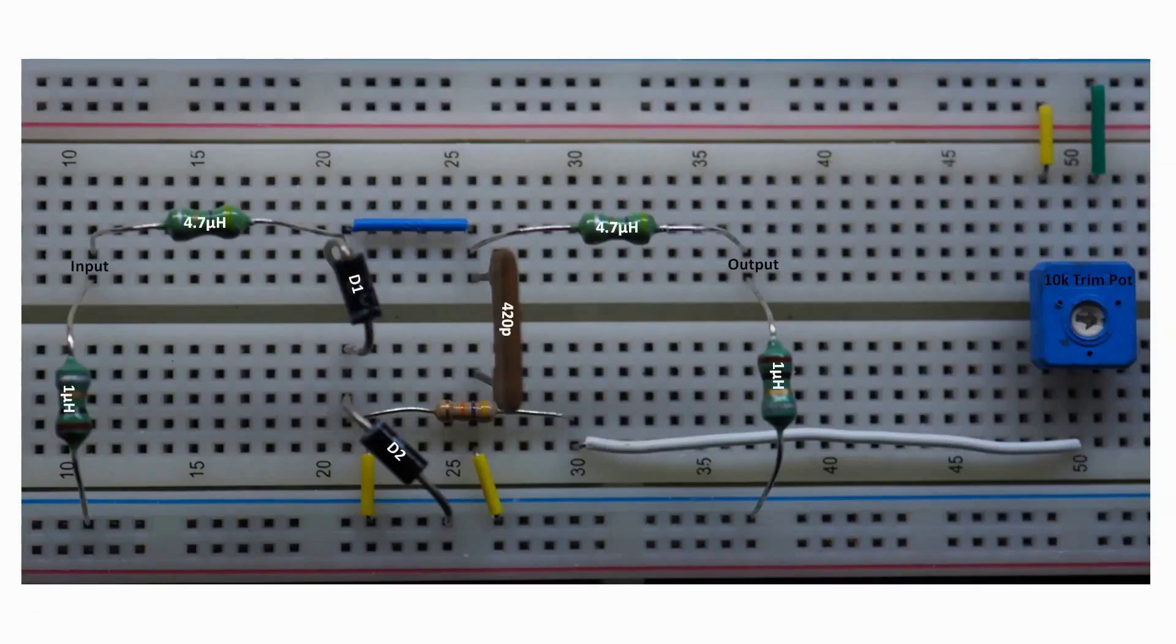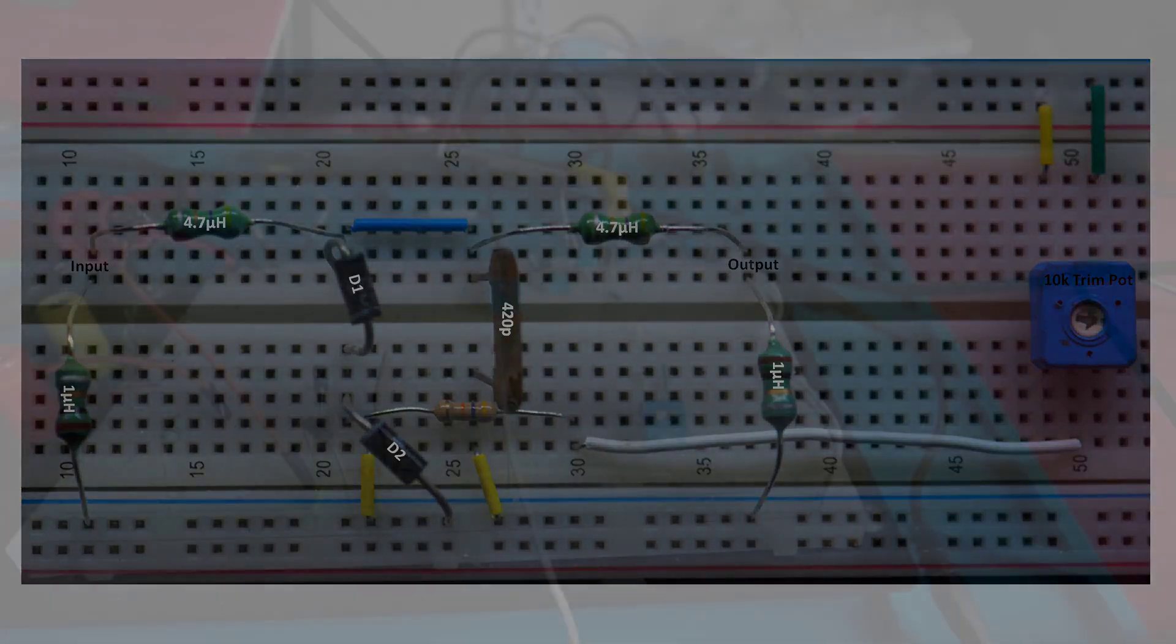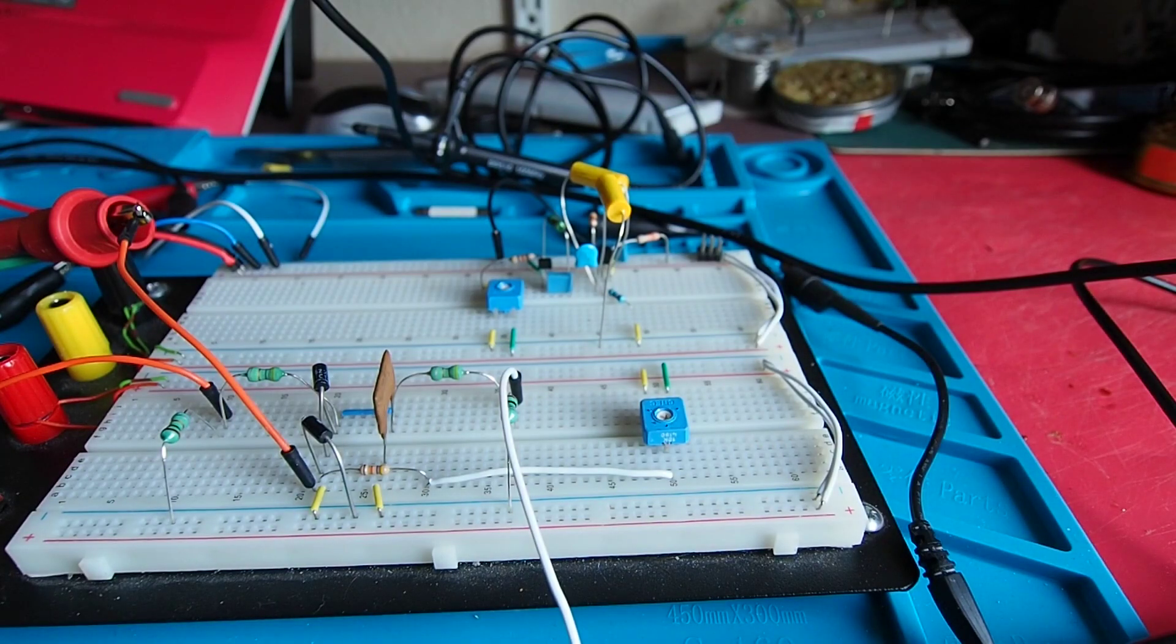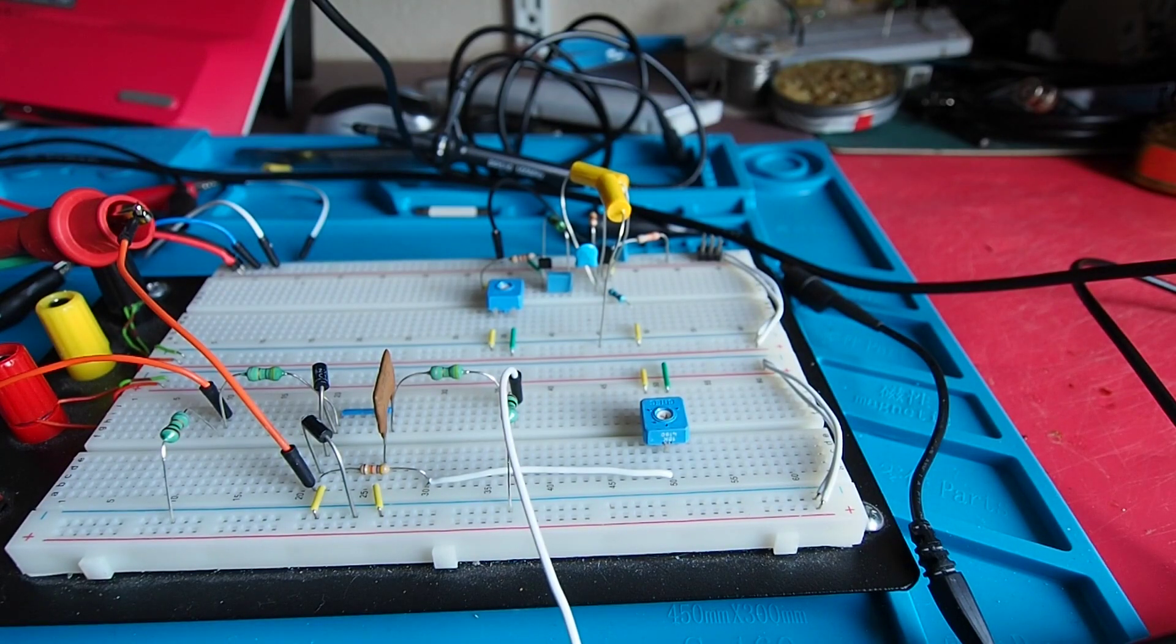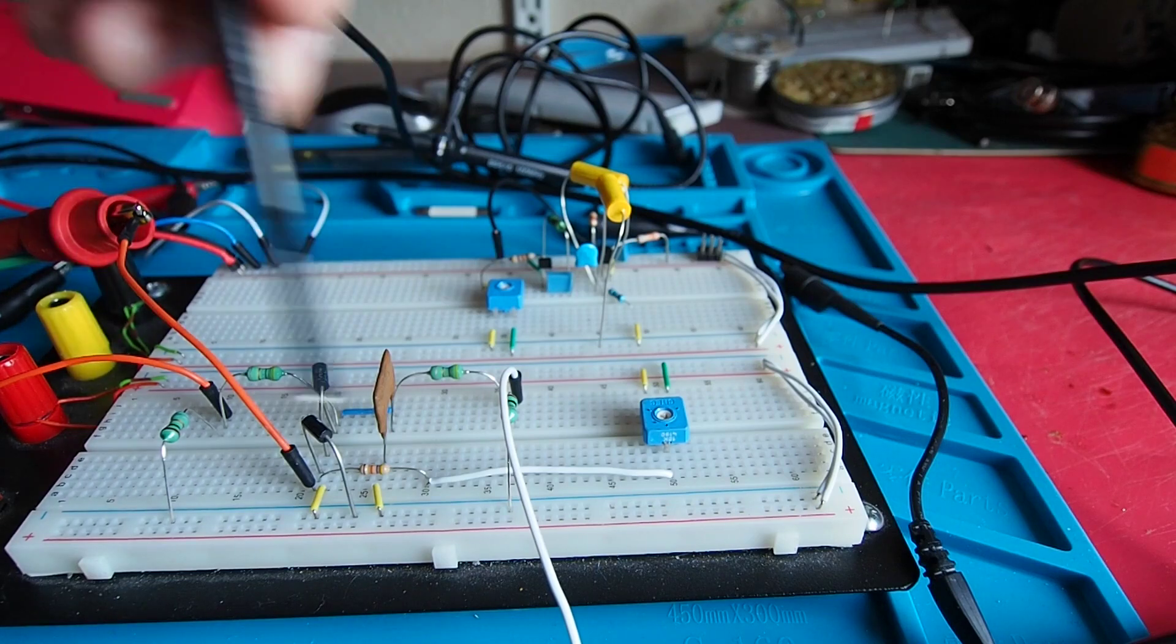So that's a voltage control filter on the breadboard really really straightforward. Input is on the left hand side there I've marked input, I've put most of the values of the components on there for you and the 47k resistor is the resistor sort of in the middle towards the bottom and the 10k trim pot providing the control voltage is way across to the right there. So that's the layout on the breadboard let's go and have a look at it on the bench.